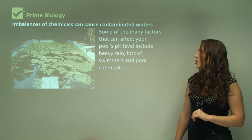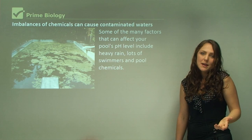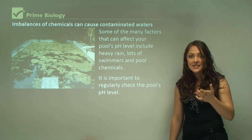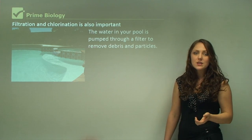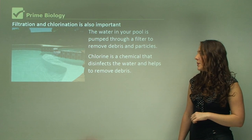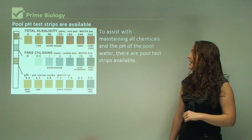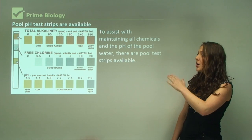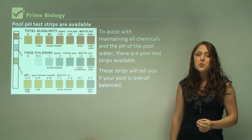Some of the many factors that can affect your pool's pH level include heavy rain, lots of swimmers, and pool chemicals. It is important to regularly check the pool's pH level to ensure that swimmers are safe. Filtration and chlorination are also important. The water in your pool is pumped through a filter to remove debris and particles. Chlorine is a chemical that disinfects the water and helps remove debris. To assist with maintaining all chemicals and the pH of the pool water, there are pool test strips available. These show the alkalinity of the pool, how much chlorine is in the pool, and the actual pH of the water.